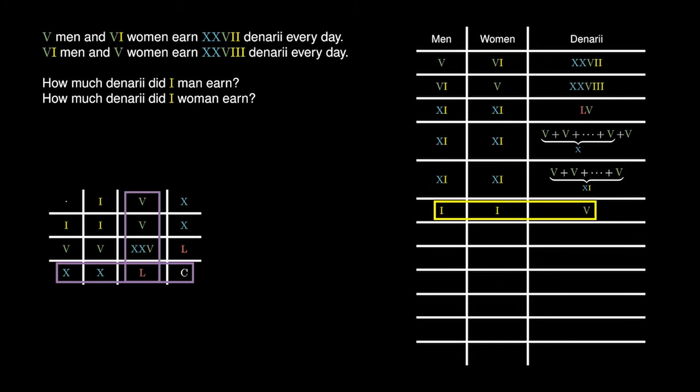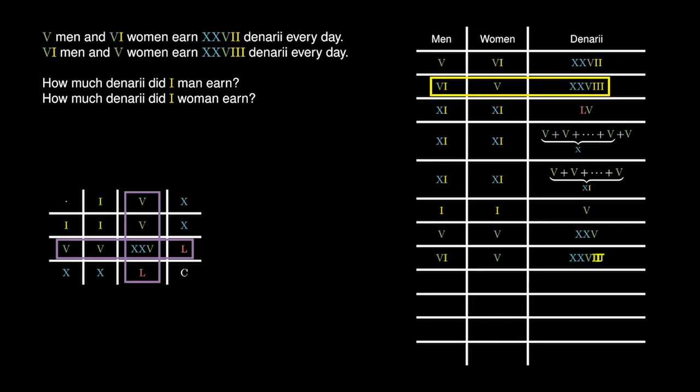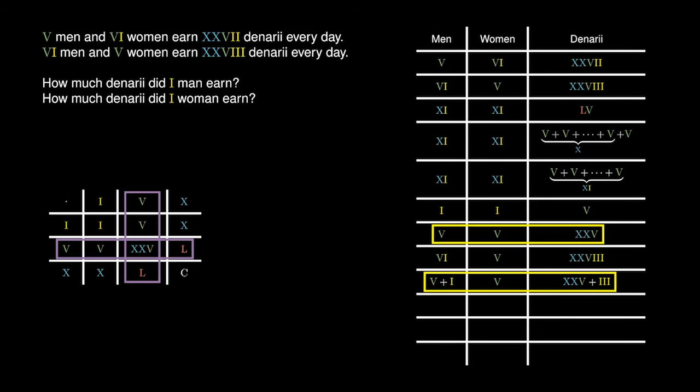On the other hand, we could take 5 and multiply that into each of these numbers. By our multiplication table, 5 times 1 gives us 5, and 5 times 1 gives us 5 again, while 5 times 5 gives us 25. We can compare this with the rule involving 6 men, 5 women and 28 denarii, and break this up into 5 plus 1 men, 5 women and 25 plus 3 denarii. Making the comparisons, since 5 men and 5 women earn 25 denarii, we can deduce that 1 man earns 3 denarii.